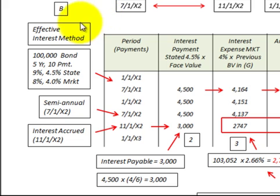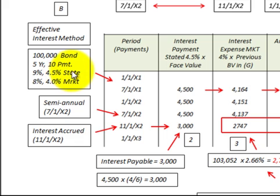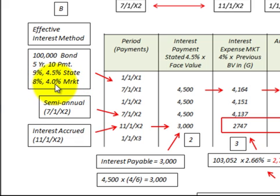In this example I'm going to use the effective interest method for amortizing the bond. We have issued a bond with a $100,000 face value for a five-year term or ten semi-annual payments. The stated rate of interest is 9% or 4.5% per semi-annual payment, and the market rate of interest is 8% or 4% per semi-annual payment. Since the market rate is less than the stated rate, we've issued that bond at a premium.